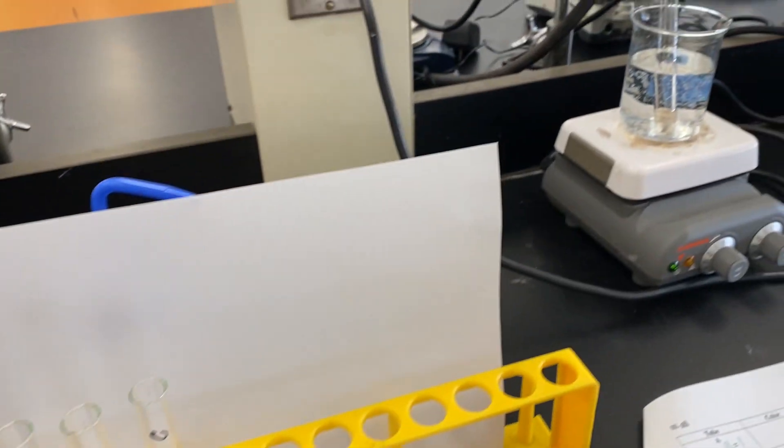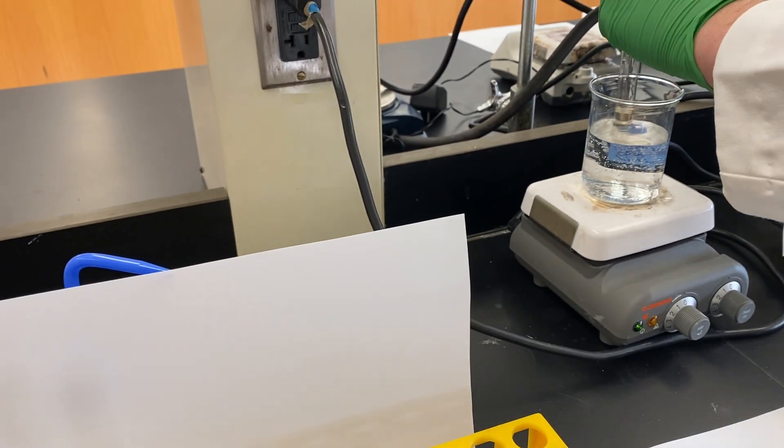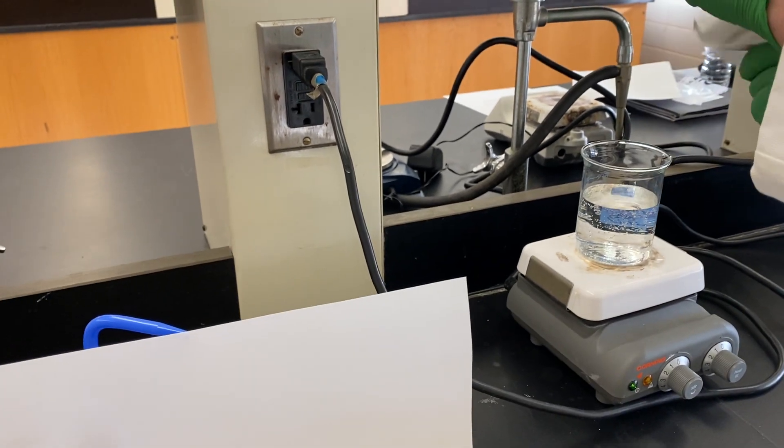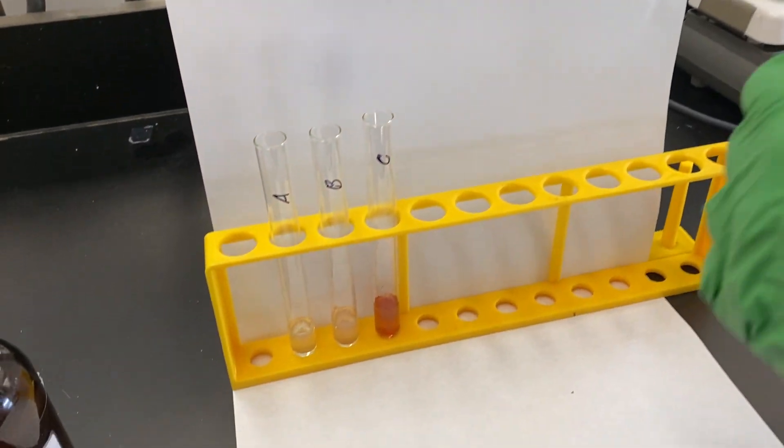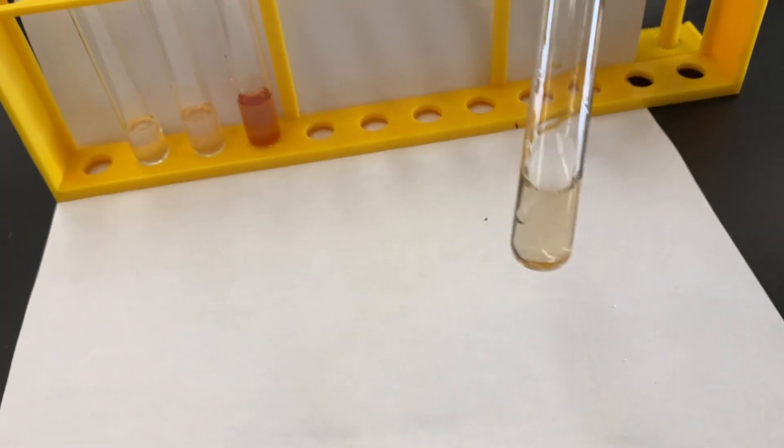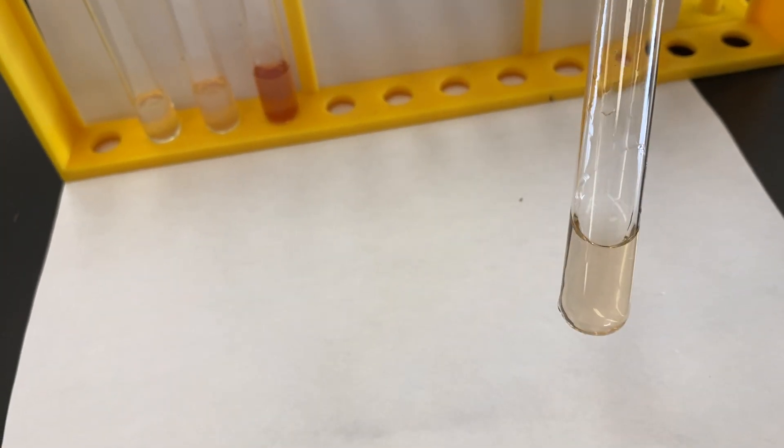Isn't that nice? Last one, test tube D. We're looking at the tyrosinase, your catechol, and sodium carbonate, pH 9.